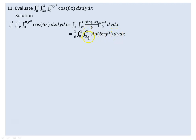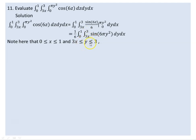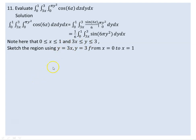Looking at the region: y goes from 3x to 3, x goes from 0 to 1. The boundary is y equals 3x, which is a line with positive slope.